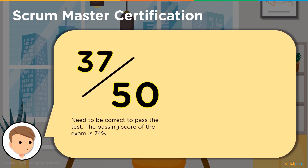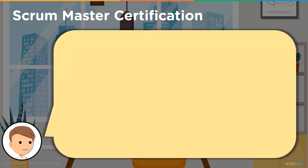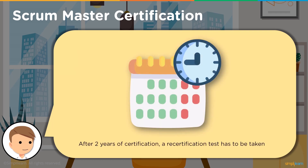The exam is one hour long with 50 questions, and you need to score at least 37 to pass. The exam costs around $29 to $30, and you have two attempts to clear it. After 90 days or two attempts, you'll need to pay $25 to take the exam again. Once certified, you'll need to recertify by taking an exam again after two years.